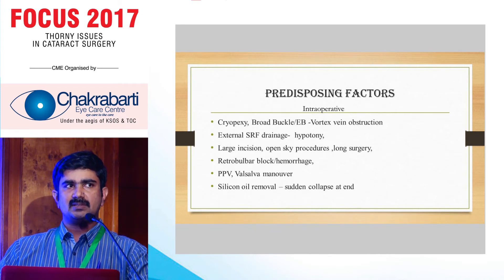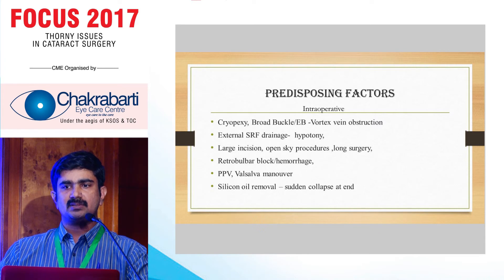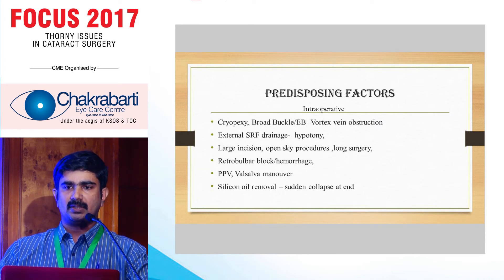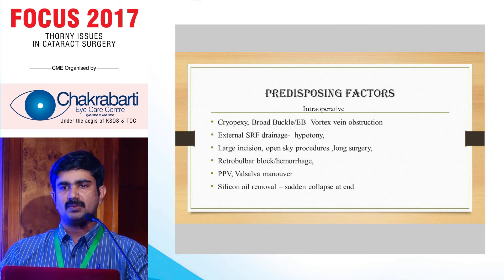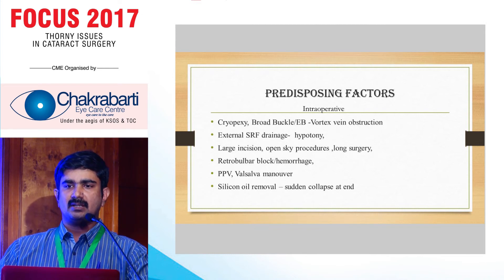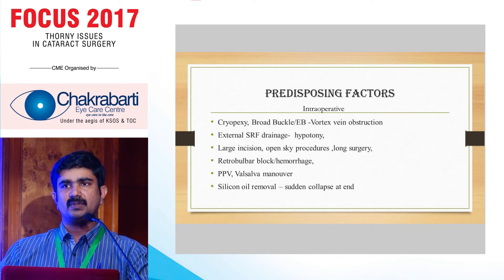In open surgeries, large incisions, open-sky procedures, and long surgery all predispose to suprachoroidal hemorrhage. A broad buckle can compress the vortex vein and also predispose the eye. PC rent and similar complications can also predispose to suprachoroidal hemorrhage. Retrobulbar block, pars plana vitrectomy, and Valsalva maneuver during surgery are again risk factors.